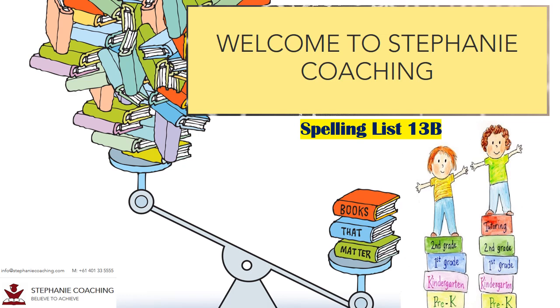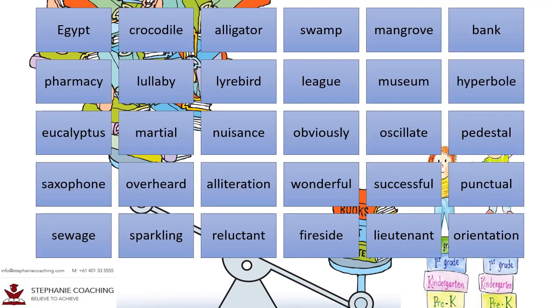This week we are focusing on common misspelled words and using better vocabulary to help students improve their writing skills. The goal is to expand children's vocabulary in writing so they can produce a better text.